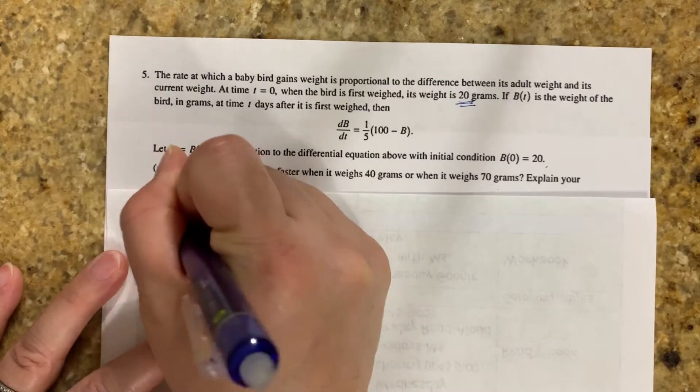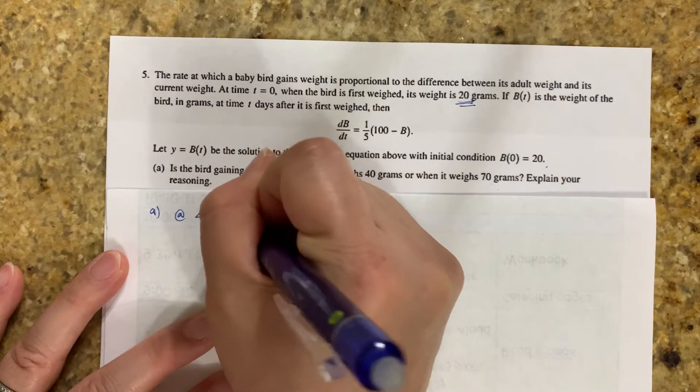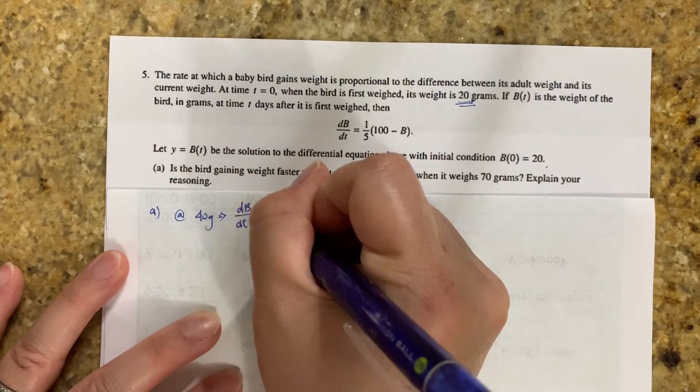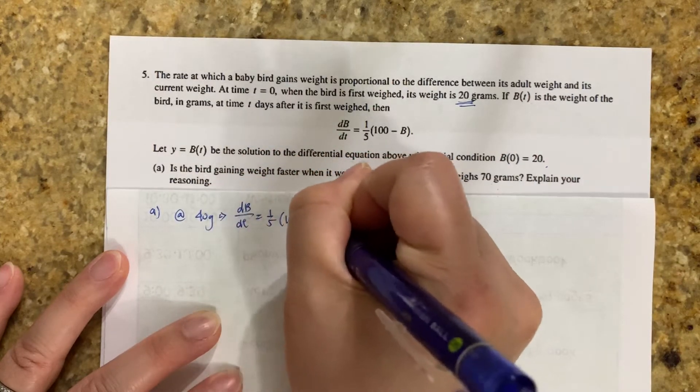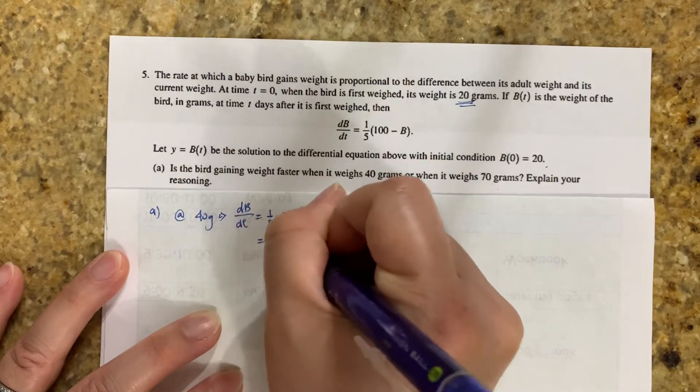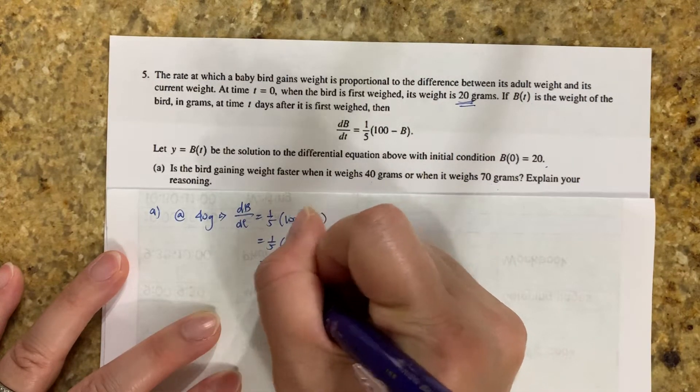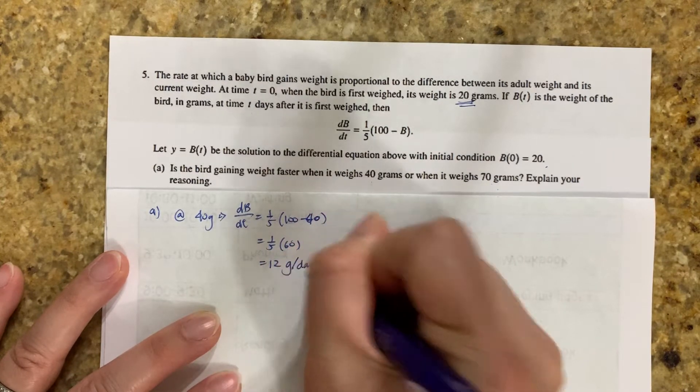So part A at 40 grams, db over dt equals 1/5 times 100 minus 40. That's 1/5 times 60. That's 12. So at 40 grams, it is gaining weight at 12 grams per day.